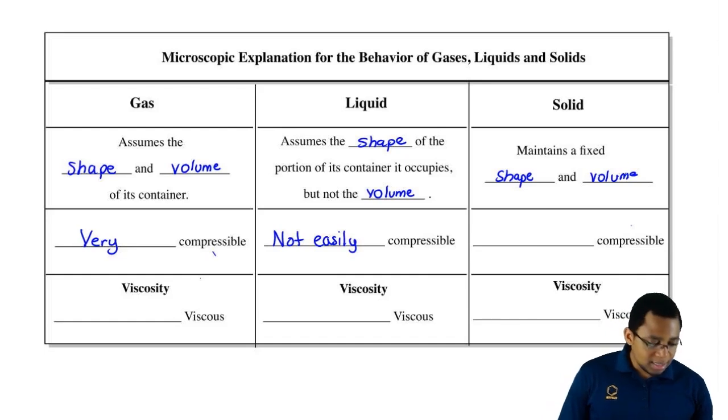Solids, we already said in the beginning that solids form a rigid structure. The atoms are tightly packed. They're as close as we can make them. We're going to say that solids are not compressible at all.